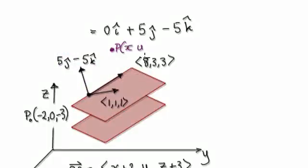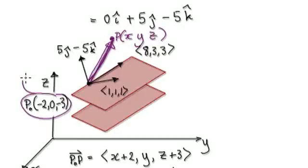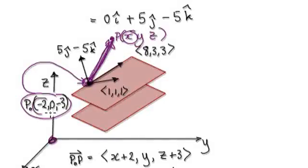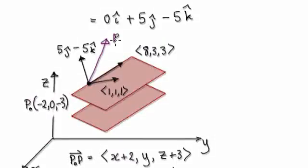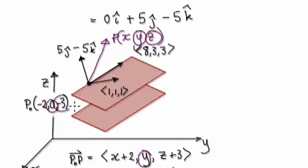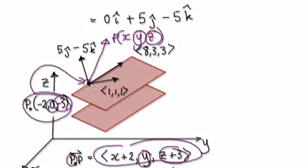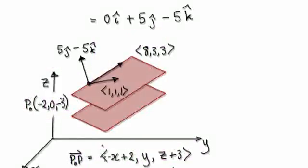Let's call the general point P(x, y, z). We need this vector from P0 to P. Remember, this point P0 is floating in space and the origin is here. To get the vector from P0 to P, we take this minus this. So we get x minus negative two, which gives x plus two. We get y minus this value, which gives this. And then z minus negative three, which gives this. So this vector from P0 to the general point P is given by this.